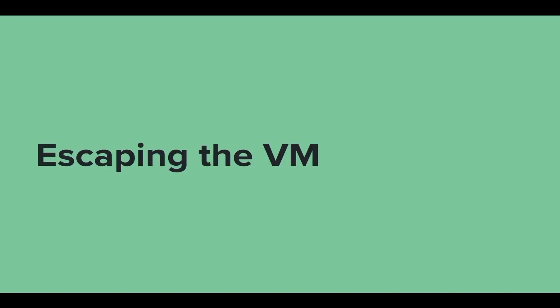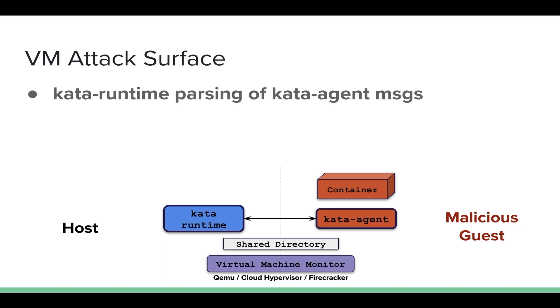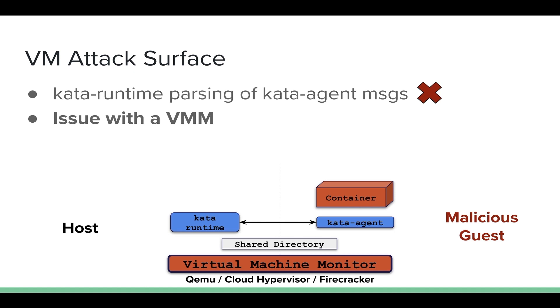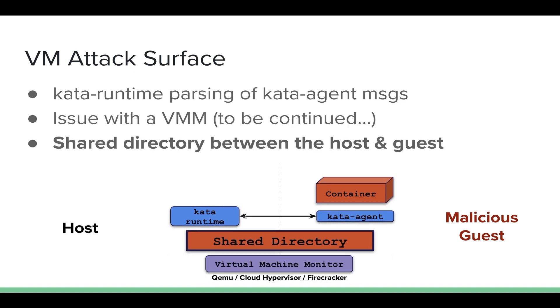The next thing we want to do is escape the virtual machine — and that will actually be a bit easier. Let's talk about the attack surface of the virtual machine. The Kata runtime is a process running on the host and passes messages from the Kata agent. If there's a vulnerability in the Kata runtime, a malicious Kata agent might exploit that, but Kata runtime is written in Golang, which is memory safe, and none of those messages are that interesting. What I really want to talk about is the shared directory between the host and the guest, because it's quite an interesting attack surface.